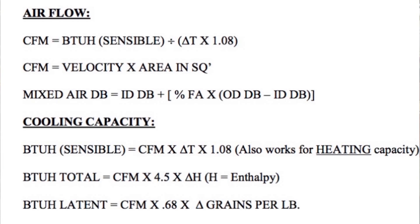Let's work through an example. If you have 1000 CFM — typical of a 2.5-ton machine at 400 CFM per ton — multiply that by 4.5, then by a delta H of 6.7, you get 30,150 BTU. The actual average delta H would be 6.67, or six and two-thirds — we just round up to 6.7. So what can you assume if your delta H is higher or lower than 6.7?